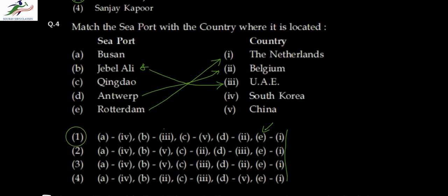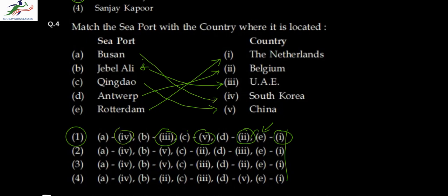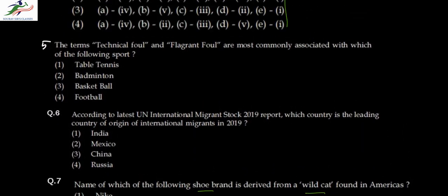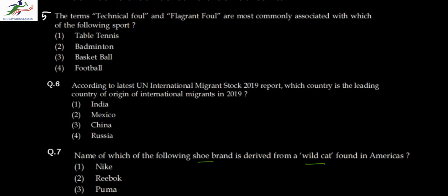B is three, which is only option one. E is one, which is correct. D is two, which is also correct. C is five — Qingdao is in China, which is a Chinese name, so definitely China. C with five is correct, B with three is UAE, and A is four — Busan is the only one left, which is South Korea. So option one is the correct order. Question five: the terms 'technical foul' and 'flagrant foul' are associated with basketball.